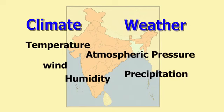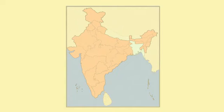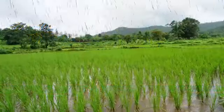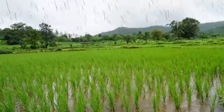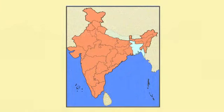You may have observed that weather conditions fluctuate very often within a day. On the basis of generalized monthly atmospheric conditions, the year is divided into seasons such as winter, summer, and the rainy season. When it comes to India, the climate is described as the monsoon type.